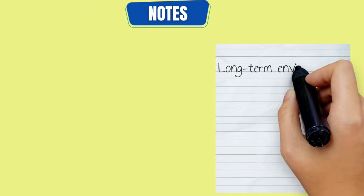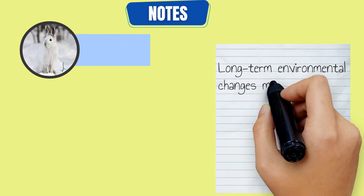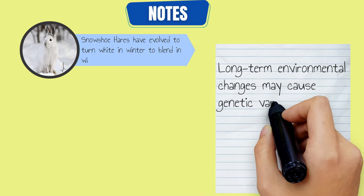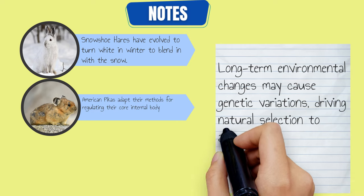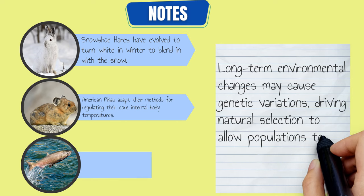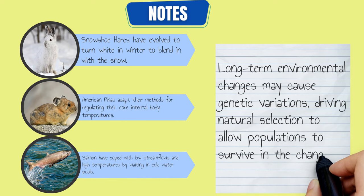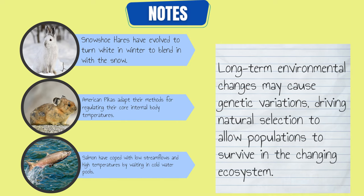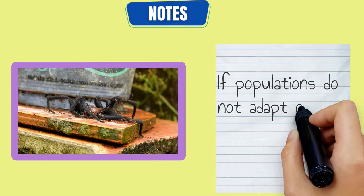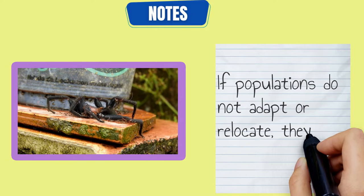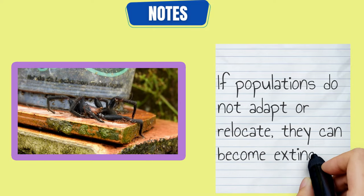Long-term environmental changes may cause genetic variations, driving natural selection to allow populations to survive in the changing ecosystem. If populations do not adapt or relocate, they can become extinct.